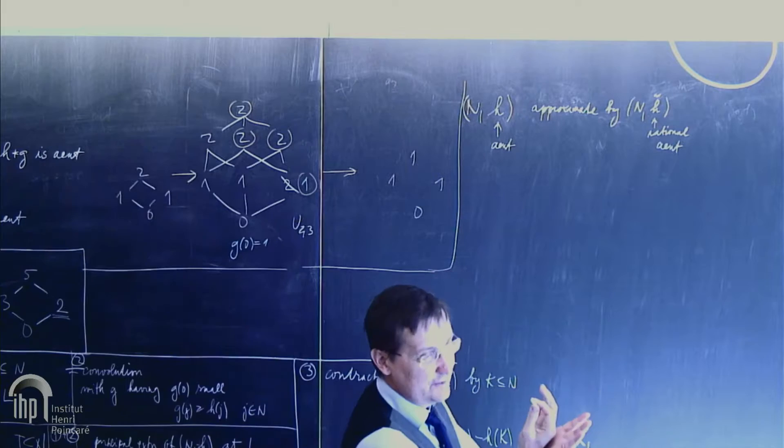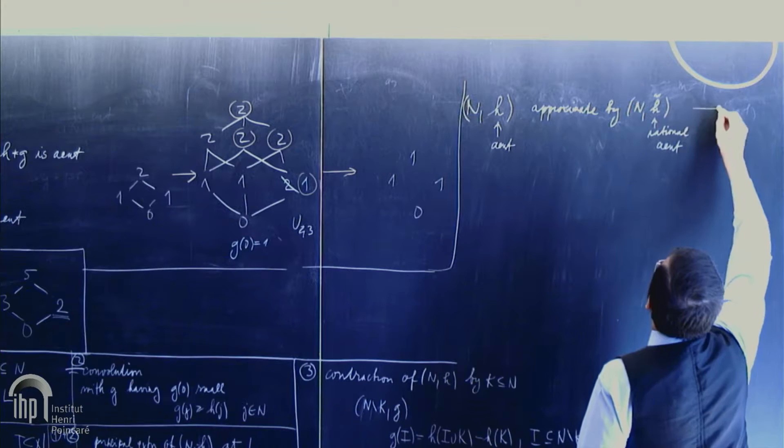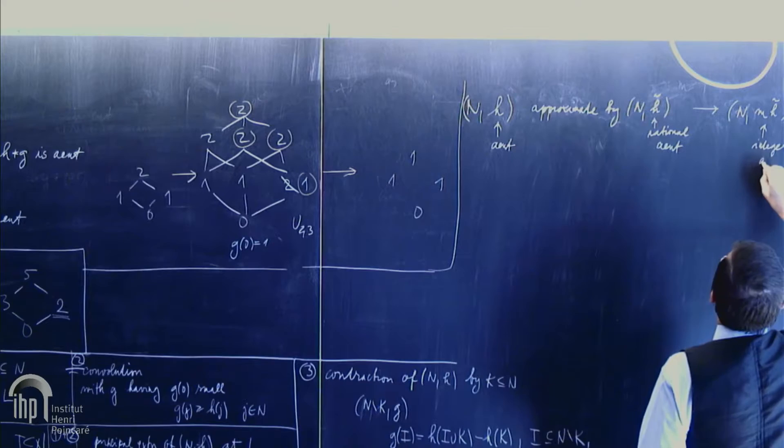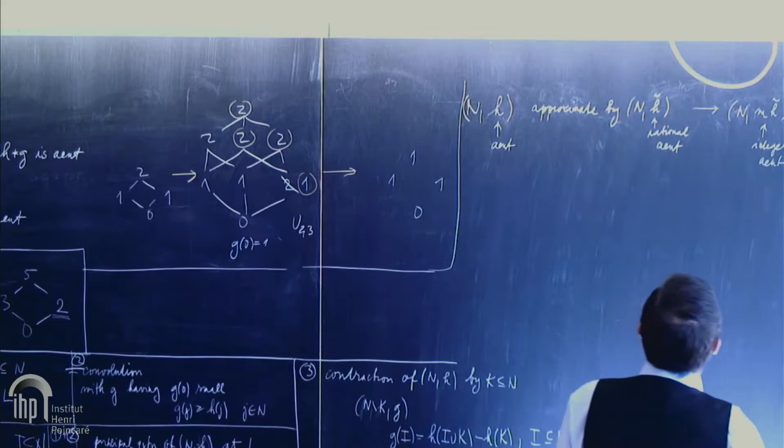And then I multiply. So I, then I get something like N, N times. This is integer. Again, almost entropic. My lemma one, yes. And then what's going on? I will show you an example.